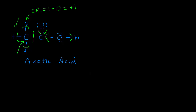For the methyl carbon (bonded to three hydrogens and one carbon), seven electrons are assigned to it. So its oxidation number is four minus seven, which is negative three — this carbon is in the −3 oxidation state. For the other carbon (the carbonyl carbon), only one electron is assigned to it, giving an oxidation number of four minus one, which is plus three. This shows that the same element can be in different oxidation states within one molecule, depending on what it's bonded to.